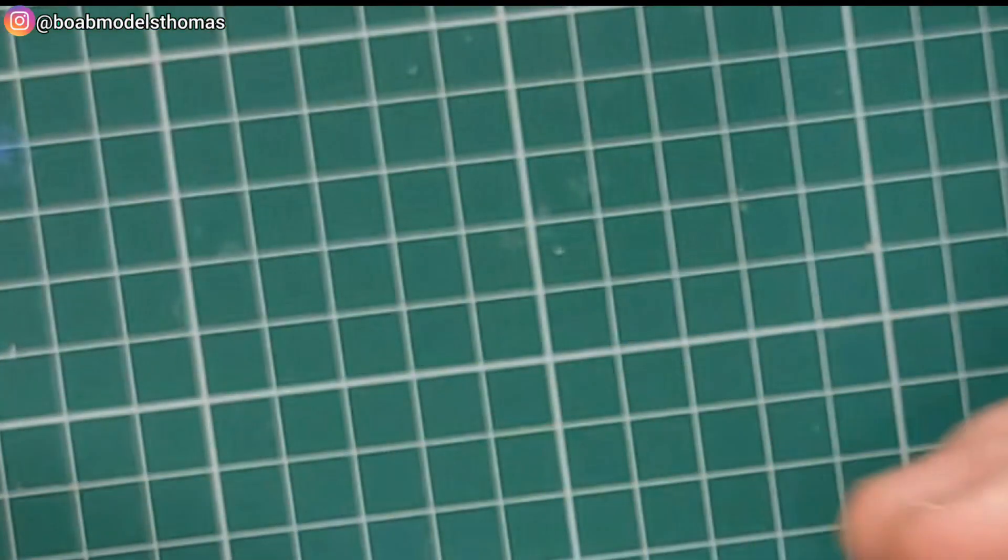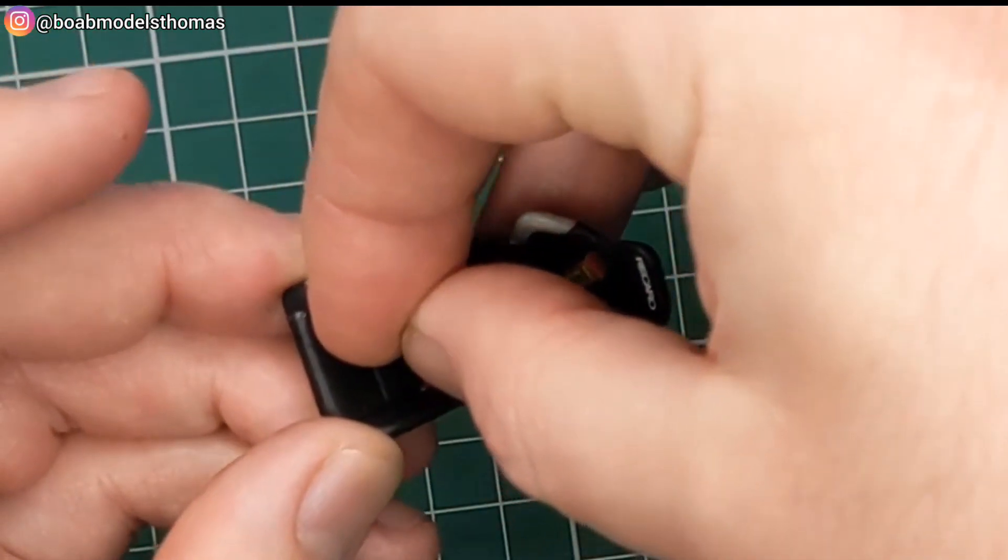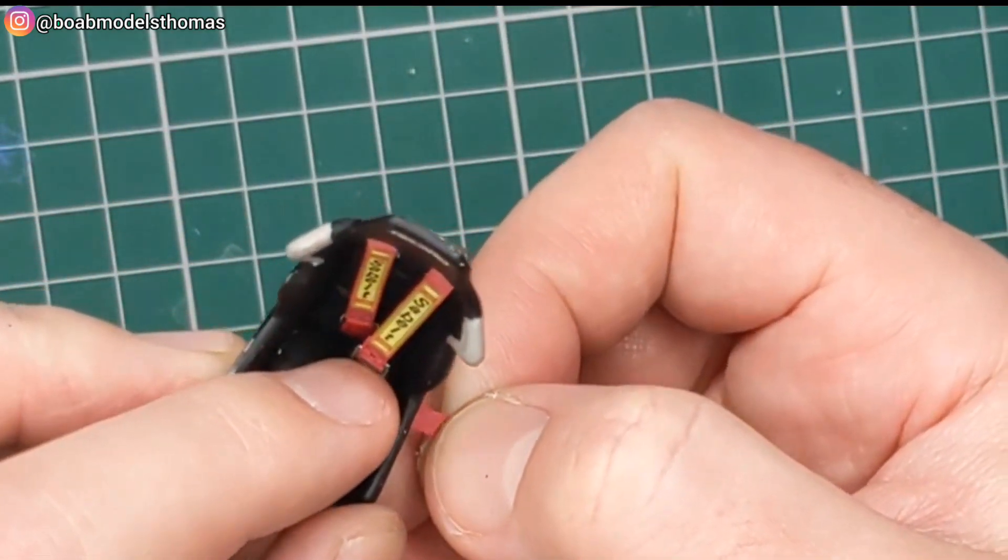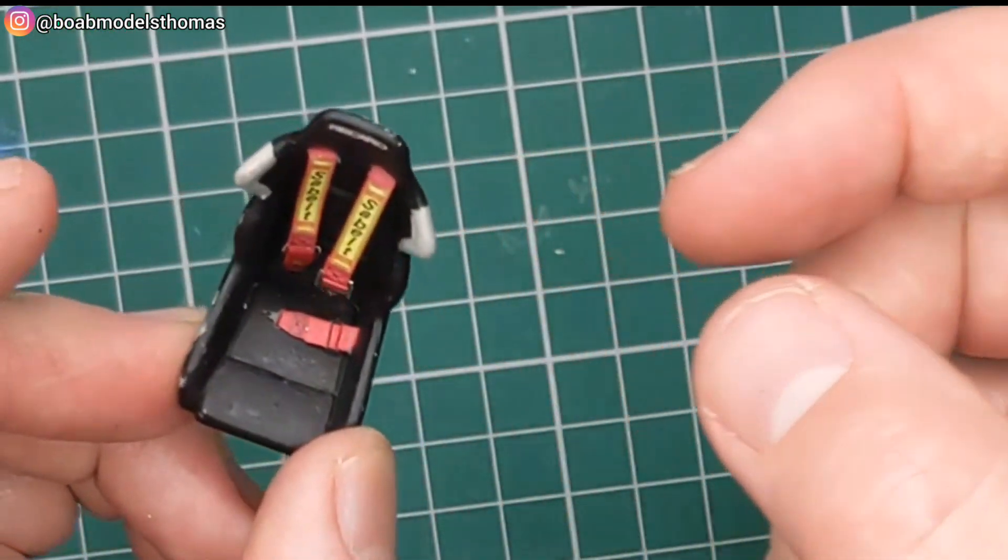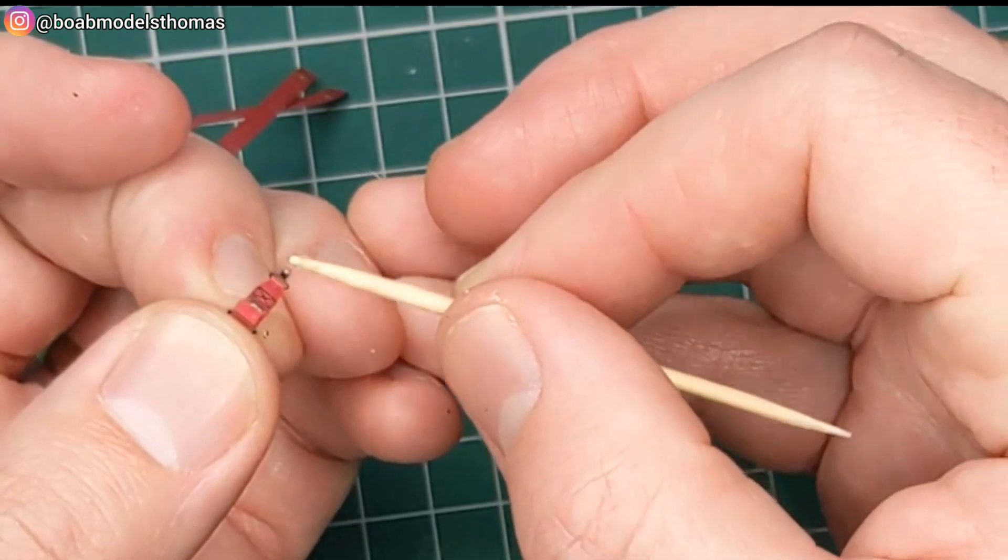There we have it. Pretty happy with that. Then thread those into place, pull them through and fold down. There's a little slot for those to lie flush against the seat.